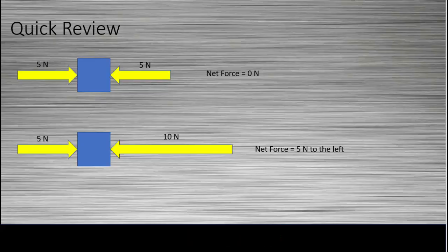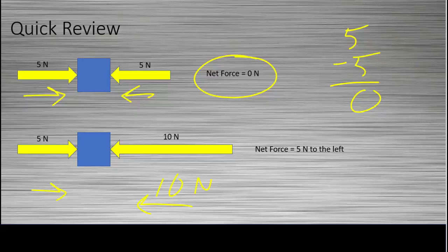Whenever we have balanced forces, what that means is that the net force is zero. So here you have five and five going opposite directions, so you would subtract five minus five is zero. That's balanced force. Here you have five and ten going opposite directions, so that would be ten minus five. So your net force would be five newtons to the left. That would not be a balanced force. Balanced force is when the net force is zero.